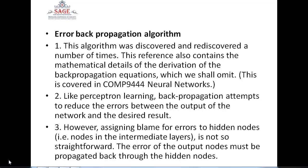This is the main objective of the error back propagation algorithm — an error-reducing algorithm used in artificial neural networks. Artificial neural networks are networks based on the human nervous system, containing a well-defined set of inputs and outputs.